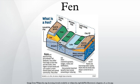Fens have a characteristic set of plant species, which sometimes provide the best indicators of environmental conditions. For example, fen indicator species in New York State include Carex flava, Cladium mariscoides, Potentilla fruticosa, Pogonia ophioglossoides and Parnassia glauca.